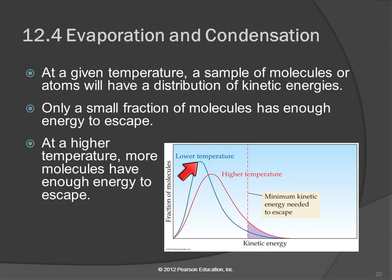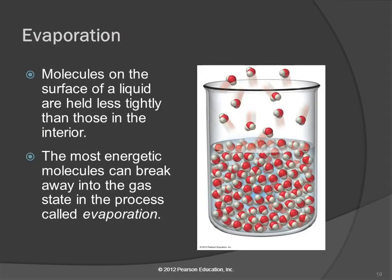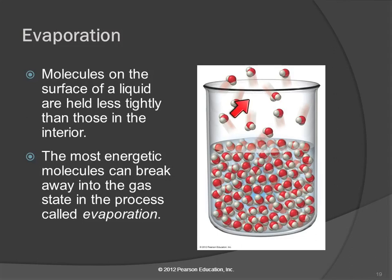If we increase the temperature — the blue curve is the lower temperature — we're shifting the kinetic energy distribution. The average kinetic energy increases, and so now we have more particles that have enough energy to escape. More of them are running faster, more of them can get out. So if they have enough kinetic energy to break through the intermolecular forces holding them in, they can escape into the gas state. If the intermolecular forces are weaker, then more of them will be able to escape.